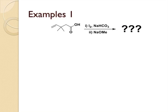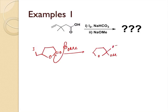First halolactonization occurs by the iodine and sodium bicarbonate to give this product. Then it is treated with sodium methoxide, which acts as a nucleophile, to give this intermediate.